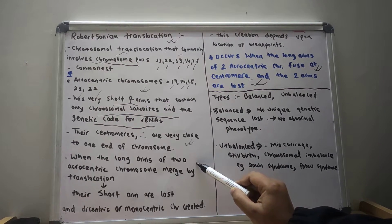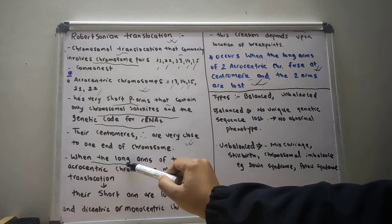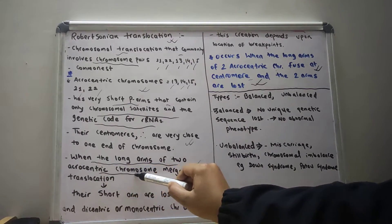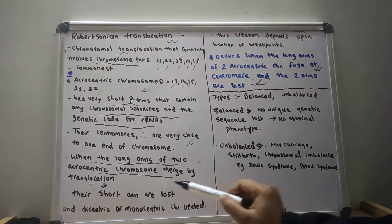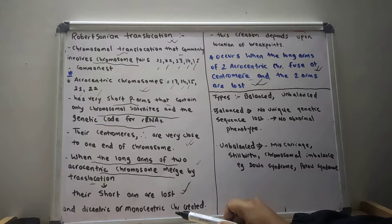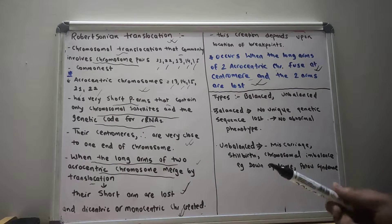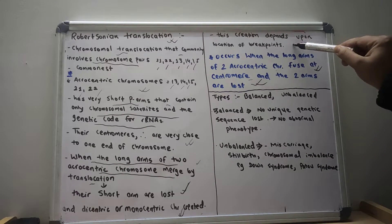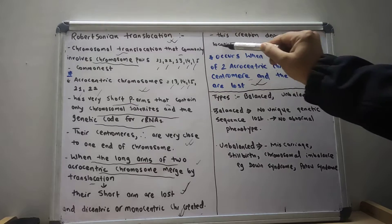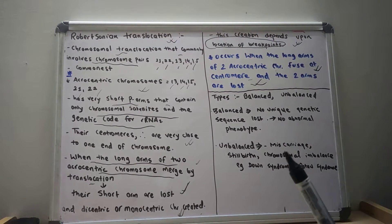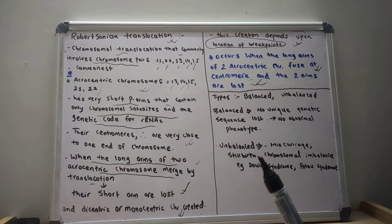When the long arms of two acrocentric chromosomes merge by translocation, their short arms are lost and a dicentric or monocentric chromosome is created. The creation of the dicentric or monocentric chromosome depends upon the location of the break points.